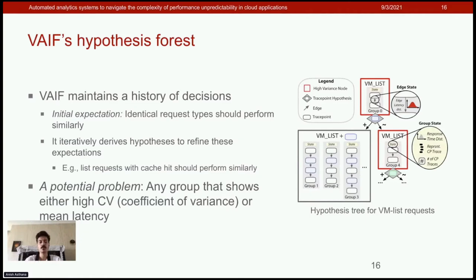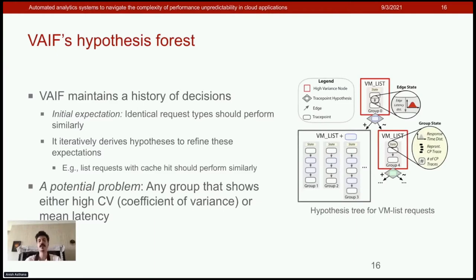We consider any group of traces that shows either high coefficient of variance or high mean latency as problematic. We have statistical thresholds, and if a group's statistics exceed the threshold, we flag it as a potential problem and start localizing it by making trace point enabling decisions.